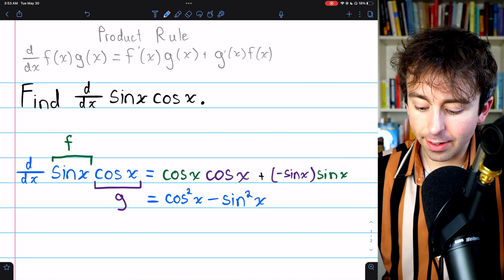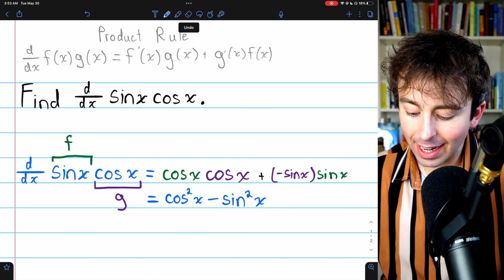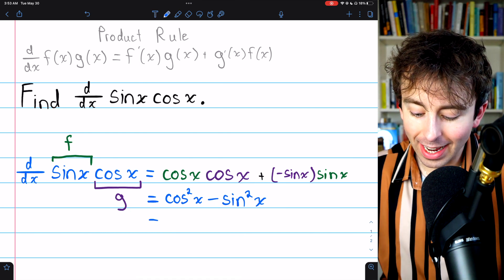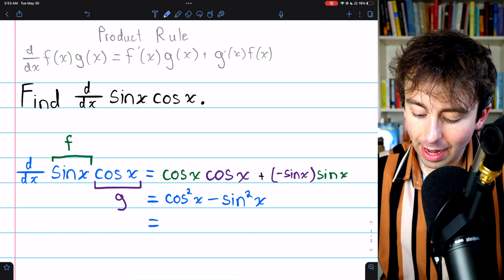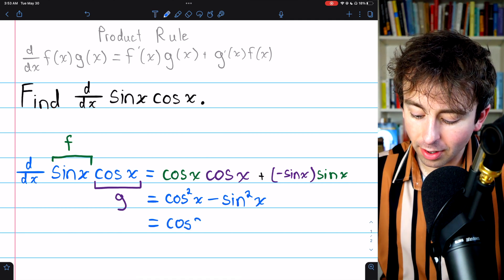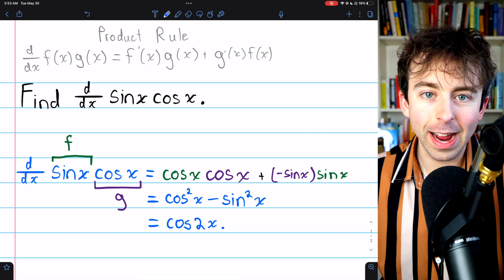And if you know your trig identities, the Pythagorean identity doesn't apply here because they're not being added, but there is another identity that does. Cosine squared of x minus sine squared of x is actually equal to cosine of 2x, so that's probably the best way we could write our answer.